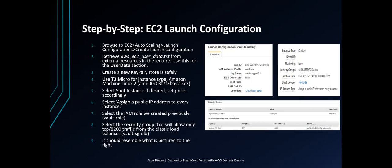Use T3 Micro for instance type with Amazon Machine Image Linux 2 as specified by the AMI. Select spot instance if desired and set prices accordingly — you'll want to set them close to market/on-demand value to ensure they are not immediately terminated. Select 'assign a public IP address to every instance'. Select the IAM role created previously, which is 'vault-role'. Select the security group that allows only TCP 8200 traffic from the elastic load balancer — 'vault-sg-elb'. This should resemble what is pictured on the right.